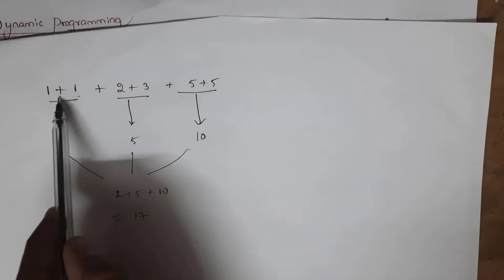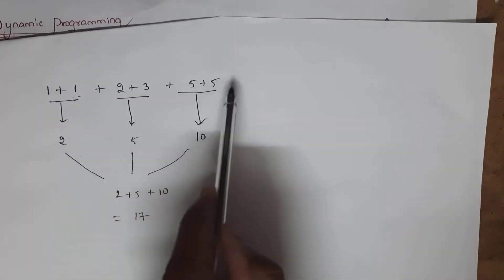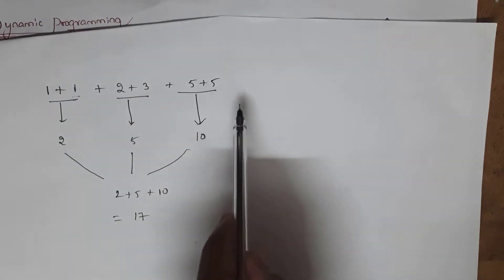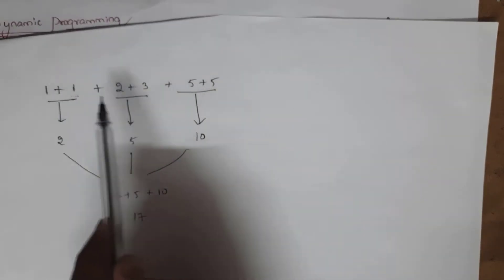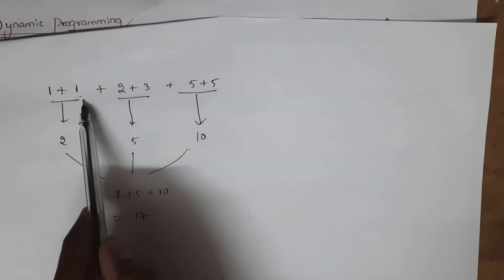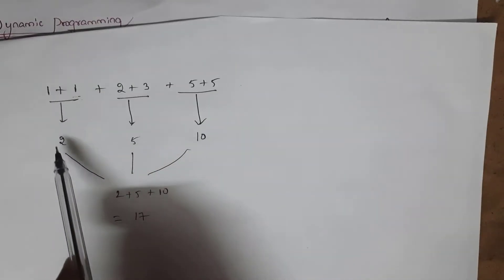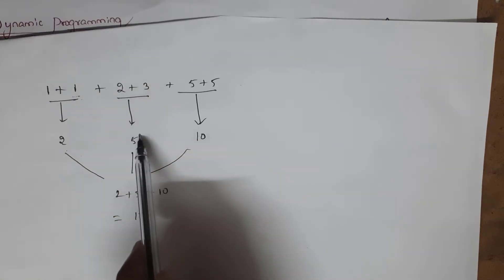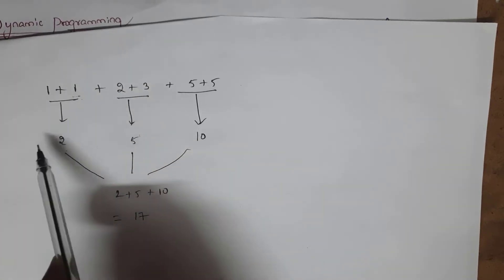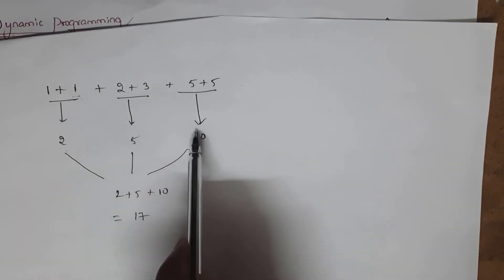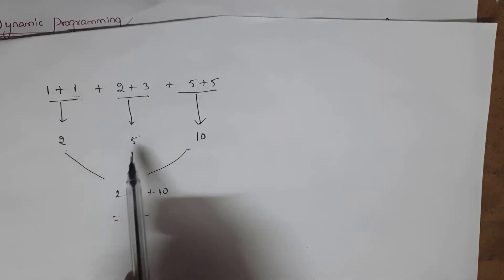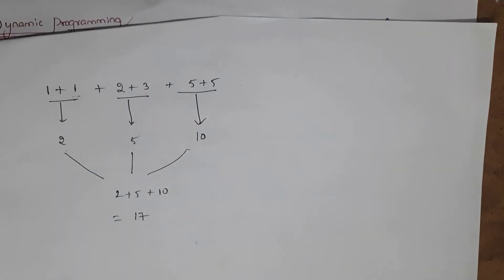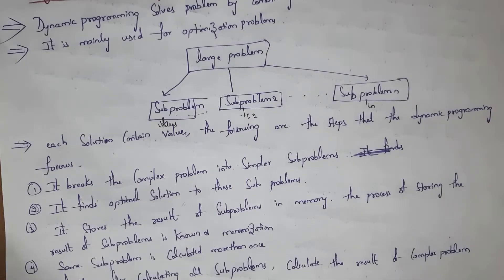Instead of finding the solution to the largest problem all at once, dynamic programming divides this largest problem into smaller sub-problems, finds the solution to these sub-problems, and at last combines the solutions in order to get the solution to the main problem.